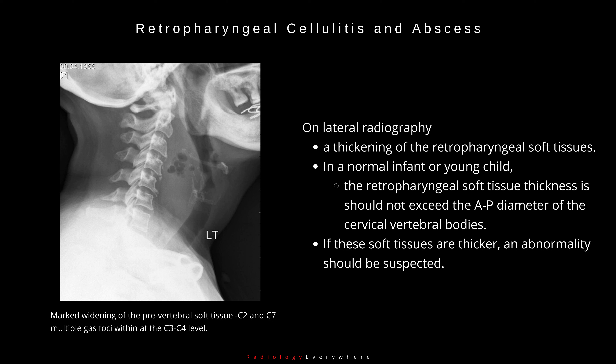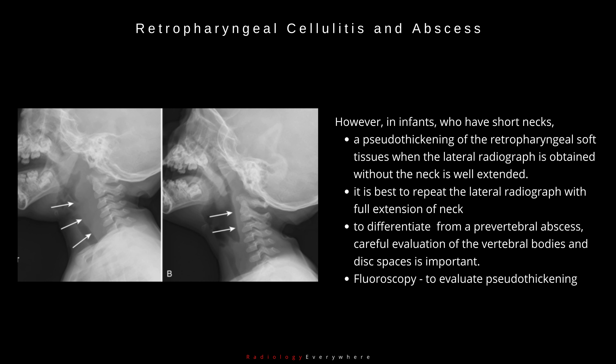If these soft tissues are thicker, an abnormality should be suspected. However, in infants who have short necks, this can be a pseudothickening of the retropharyngeal soft tissues when the lateral radiograph is obtained without the neck well extended. It is best to repeat the lateral radiograph with the neck placed in full extension. For differentiation from a prevertebral abscess, careful evaluation of the vertebral bodies and disc spaces is important. Fluoroscopy can also be used to evaluate whether the pseudothickening is persistent.